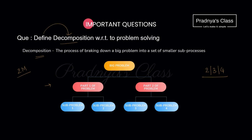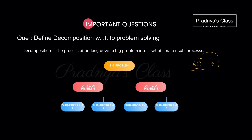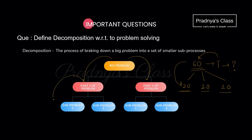Decomposition is breaking down a bigger problem into smaller ones. Suppose you are going for an educational tour from school or college and there are 60 students in the class. It will be very difficult for a teacher to manage all 60 students. In this situation, the teacher divides the students into 3 batches of 20 each. This is nothing but decomposition — breaking down the bigger problem into smaller ones. With the help of that, handling a smaller portion of the bigger problem becomes very easy. Look at the diagram — the bigger problem is divided into parts, and part 1 is further divided into sub-problems.